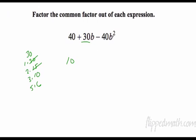10 goes in. Then I need to look at b² and b. I have no common b, so 10 is my greatest common factor. I go back and divide: 40 divided by 10 is 4, plus 30 divided by 10 is 3b, minus 40 divided by 10 is 4b². There you have that.